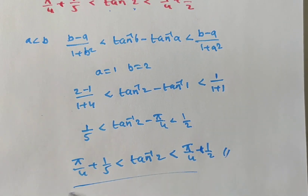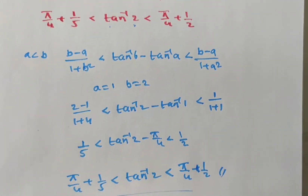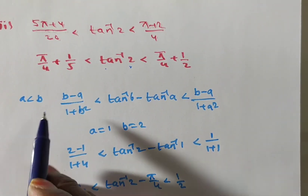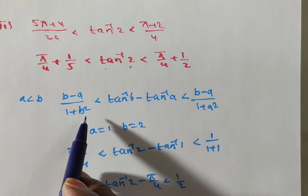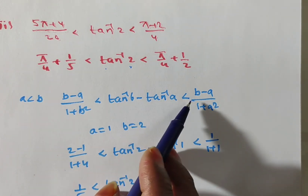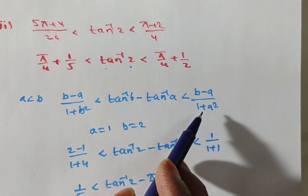Adding pi/4 to the entire inequality: pi/4 plus 1/5 is less than tan inverse 2, which is less than pi/4 plus 1/2. Hence proved. Friends, are you understood clearly how to prove the inequality and deduce the results from Lagrange's mean value theorem?